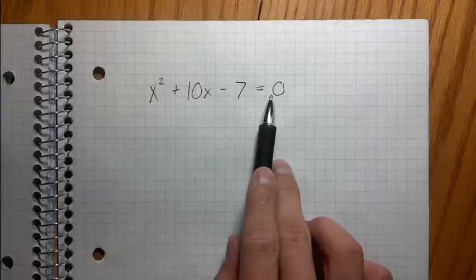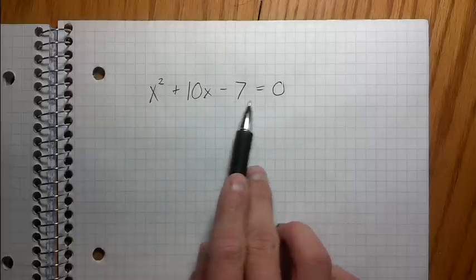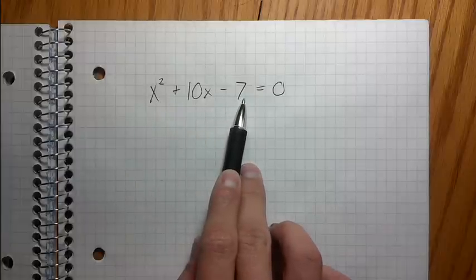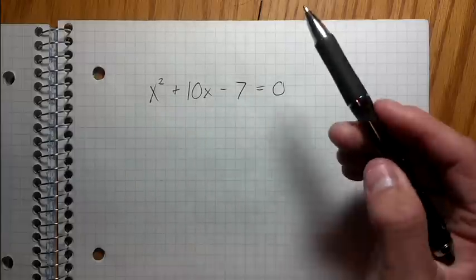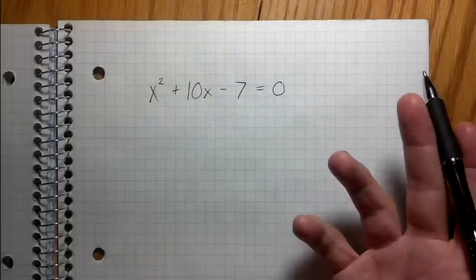So the first thing you want to do is always factoring because it's usually the easiest. But taking a look at this, you can see that you really are not gonna be able to factor this equation because I can't think of any factors of 7 that add to make 10, right?